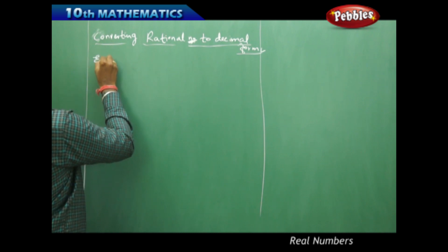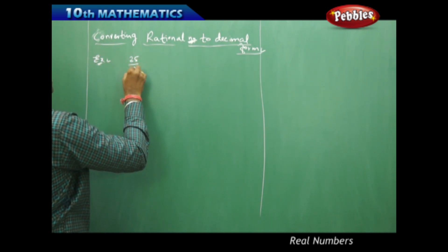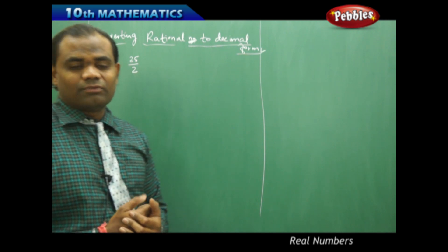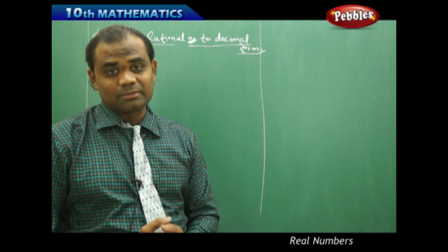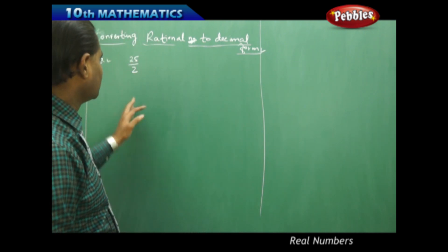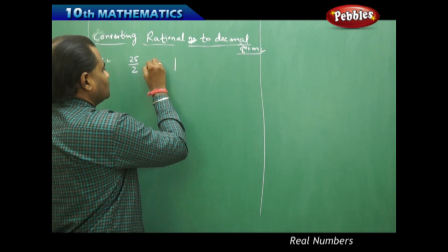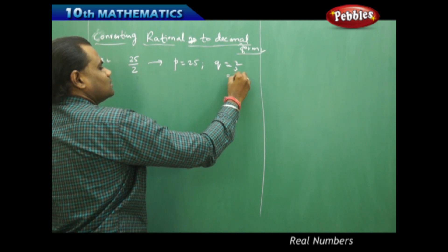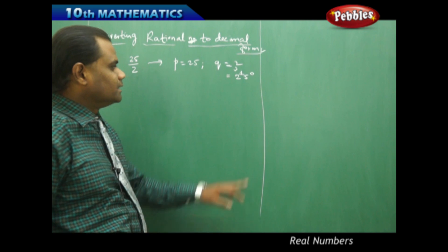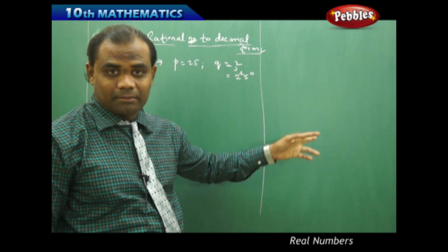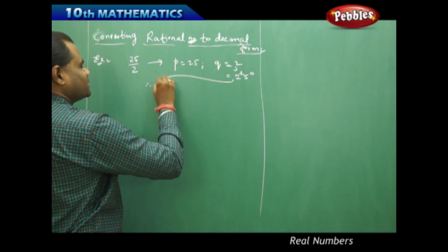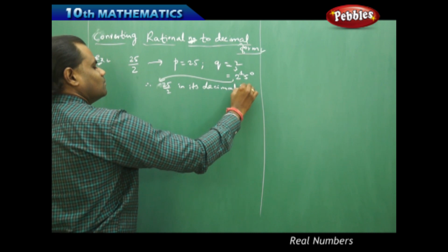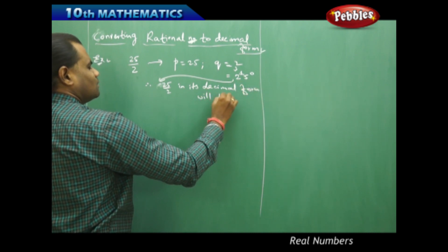Converting a rational number to decimal form. Let's take the example 25 over 2. This is a rational number in its most simplified form where p is 25 and q is 2. Before we determine whether the decimal is terminating or non-terminating, I identify the value of q. Here q is 2, which can be clearly expressed as 2^1 × 5^0. Therefore, since q is expressed in the form 2^n × 5^m, 25/2 in its decimal form will terminate.